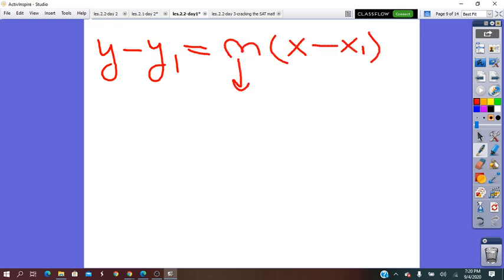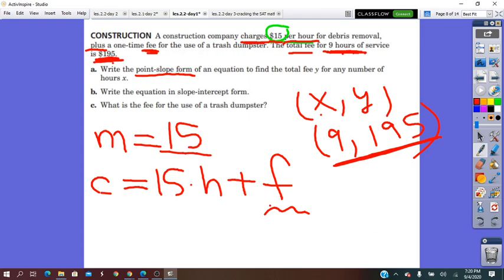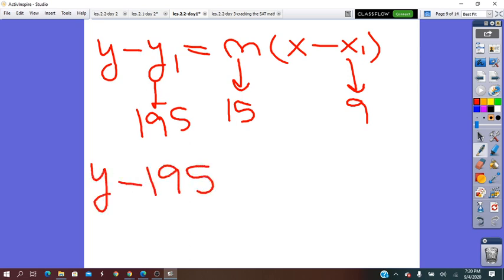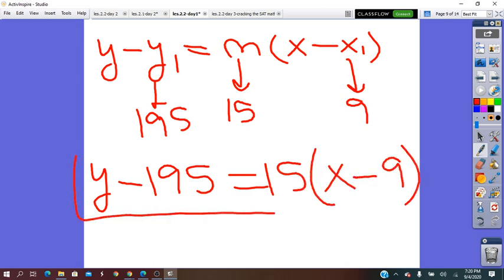The slope, we said, is 15. And, the point, X is 9 and Y is 195. So, here, 195, and here I put the 9. Substitute Y minus 195 equals 15 times X minus 9. So, this is the point slope form.